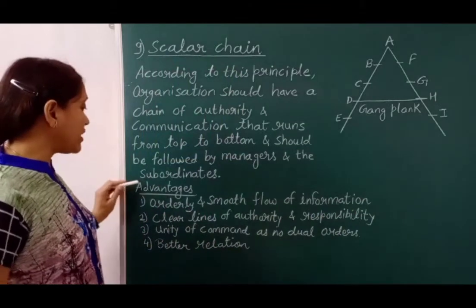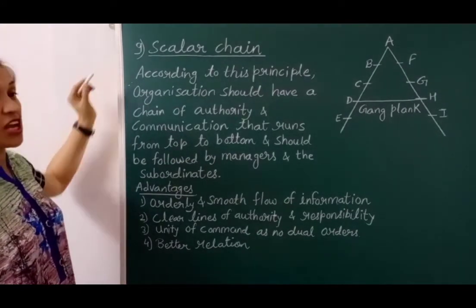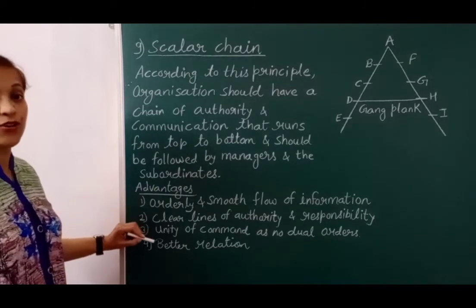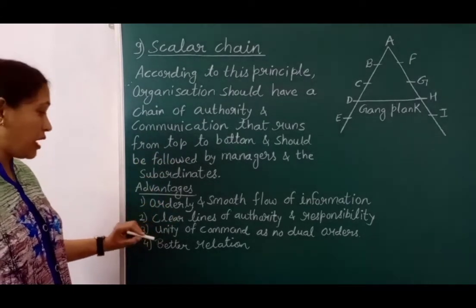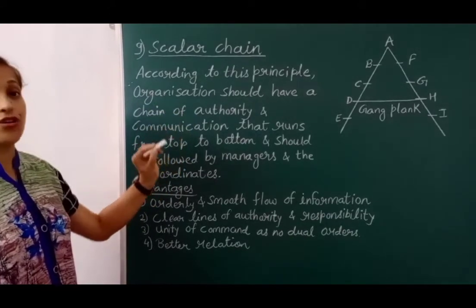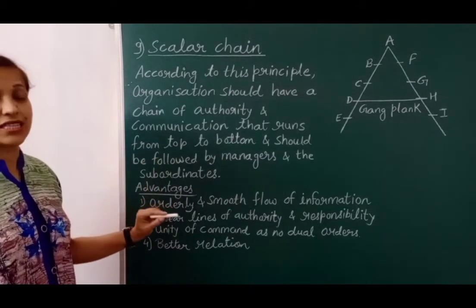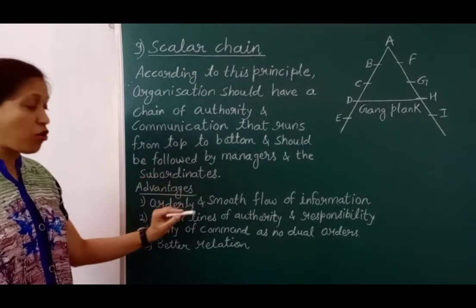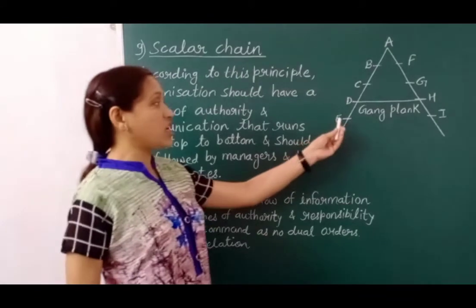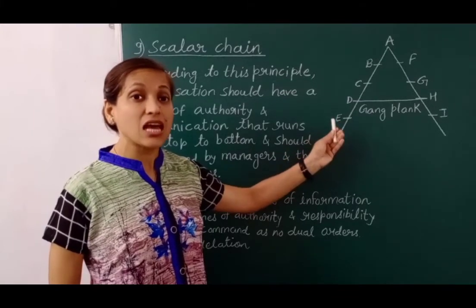Now the advantages of scalar chain: First, it maintains orderly and smooth flow of information — by following this principle, a direct message is passed to all employees and no particular employee is left without receiving the message. Second, clear line of authority and responsibility — every employee's authority and responsibility is fixed, their superior-subordinate relationship is fixed, and they know from whom to take orders, whom to follow, and to whom to report.